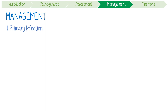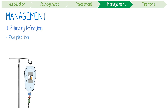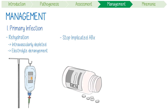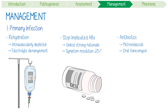Let's consider three different management scenarios. Firstly, a primary C. diff infection. Always consider rehydration, as diarrhea can cause severe intravascular depletion and electrolyte derangements. You should also stop any implicated antibiotics that could have caused the infection, unless there is a strong rationale for continuing them — symptom resolution can occur in about a quarter of cases, and the likelihood of relapse is also reduced. In terms of antibiotics to treat the actual infection, the first line is either metronidazole or oral vancomycin. Oral, unlike IV vancomycin, does not need serum concentration monitoring, because oral vancomycin doesn't absorb well into the systemic circulation.